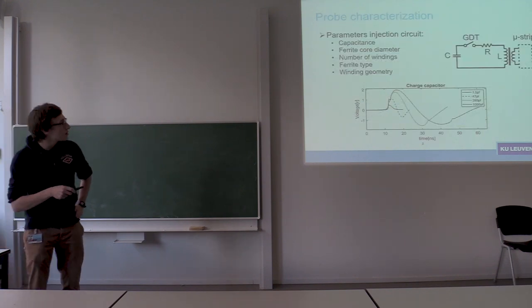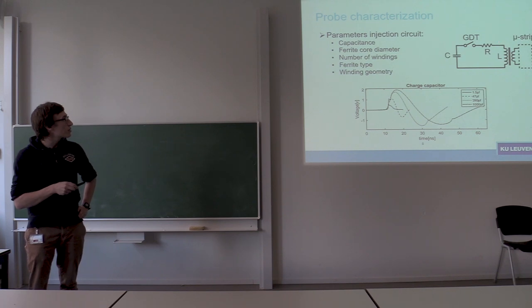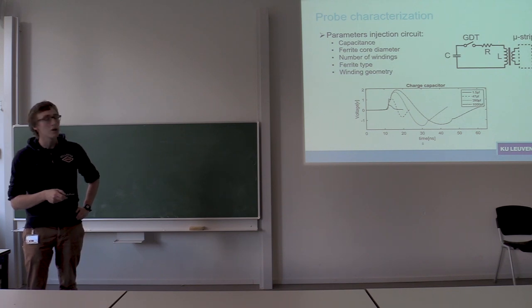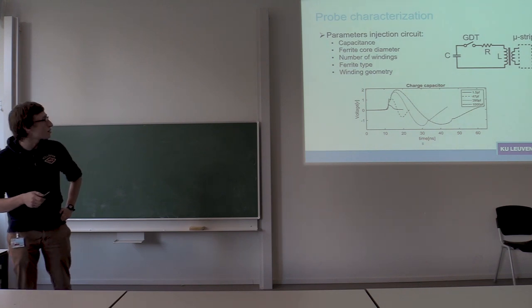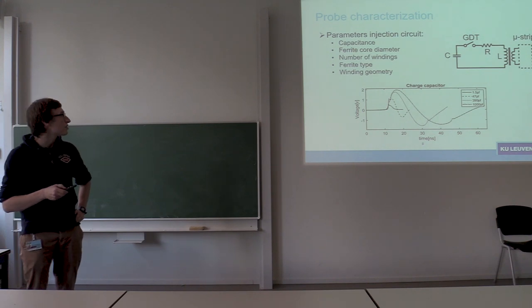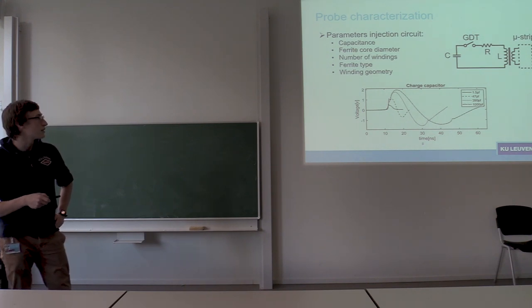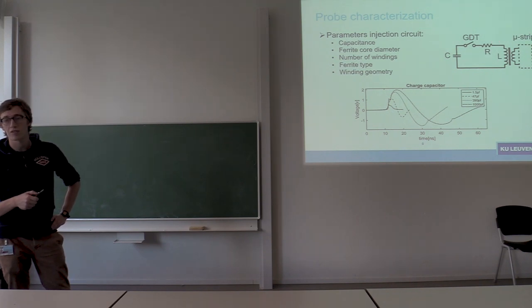Okay, so we mimic the basic RLC circuit and the properties that we vary are the capacitance, the inductance - the inductance by varying the diameter of the ferrite core, the number of windings, and the ferrite type and the winding geometry. The resistance is always just taken as the parasitic resistances in the circuit.